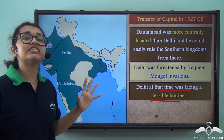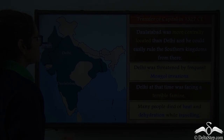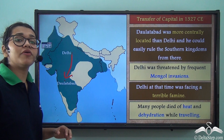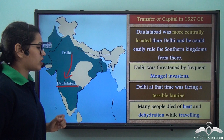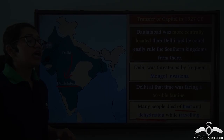He asked his subjects to move from Delhi to the south. However, there was no transportation available, and there was another major problem: when the people began travelling from Delhi to Daulatabad, it was summer. Many people died of heat and dehydration during the journey. Once again, he had big plans, but the execution of those plans was poor, leading to serious administrative failure.